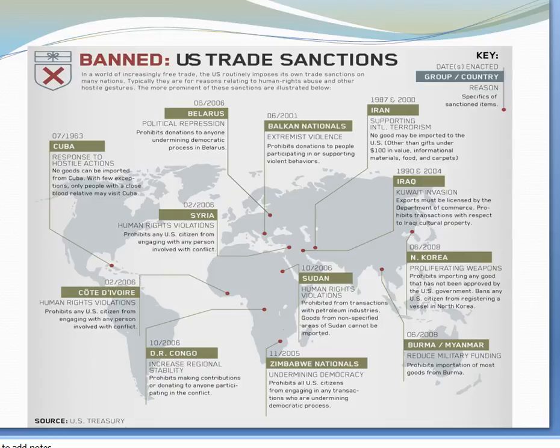Here is a chart of US trade sanctions in different countries for different reasons — some might be political repression, extremist violence, supporting terrorism, or proliferating weapons. There are many reasons why the US or other countries might impose a trade sanction.